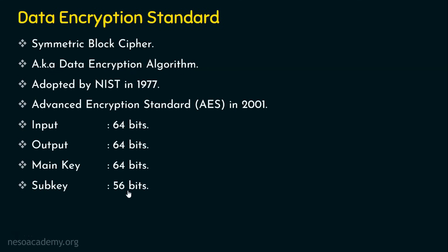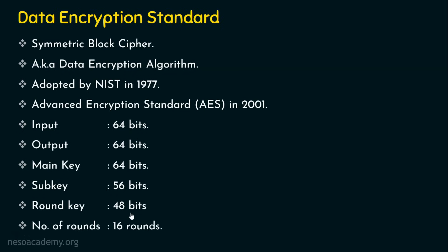The 56-bit key length is what we normally refer to for DES. As we saw in the Feistel structure, there are n rounds; here we have a fixed number of rounds. There are 16 rounds in DES, and for all these rounds we need round keys. The size of the round key is 48 bits. For 16 rounds we need 16 round keys, and these are generated using the 56-bit key — which helps the DES algorithm generate 16 48-bit round keys.